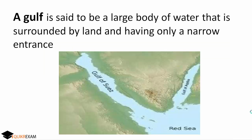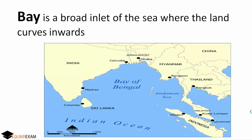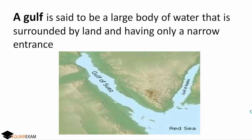Next, what is a Gulf? A Gulf is a larger water body that is surrounded by land and has a narrow entrance — that is, a narrow opening to the main water body. Don't confuse Gulf and Bay: a Bay has a broader opening while a Gulf has a narrow opening with the main water body.